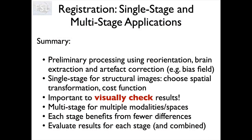To summarize: we've seen how single-stage and multi-stage registration are applied. Preliminary processing — reorientation, brain extraction, and sometimes bias field correction — is always recommended first. For single-stage structural registration, you can determine the appropriate spatial transform and cost function from the problem setup. Always visually check your results. Multi-stage registration is commonly used in big pipelines, benefiting from each stage being simpler with fewer differences to solve. Evaluate results at each stage as well as the combined result, and fix individual stages if anything goes wrong.